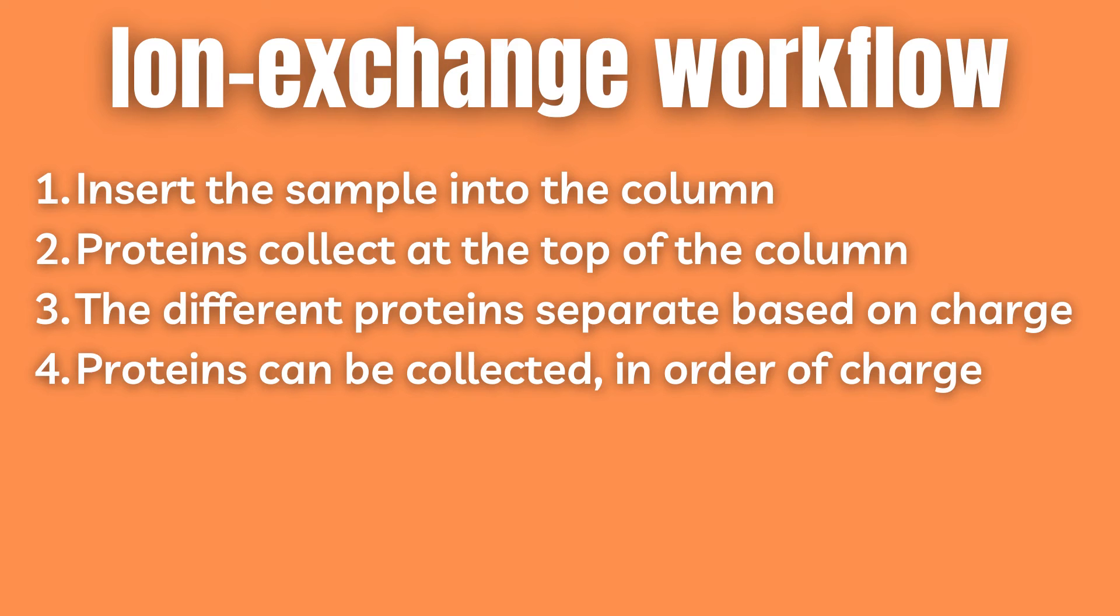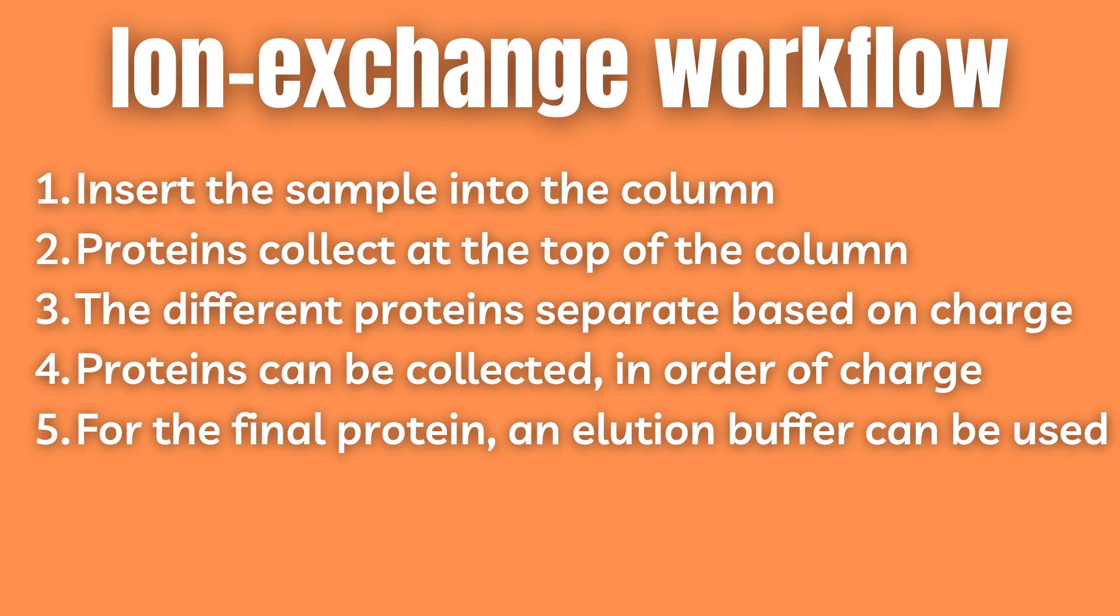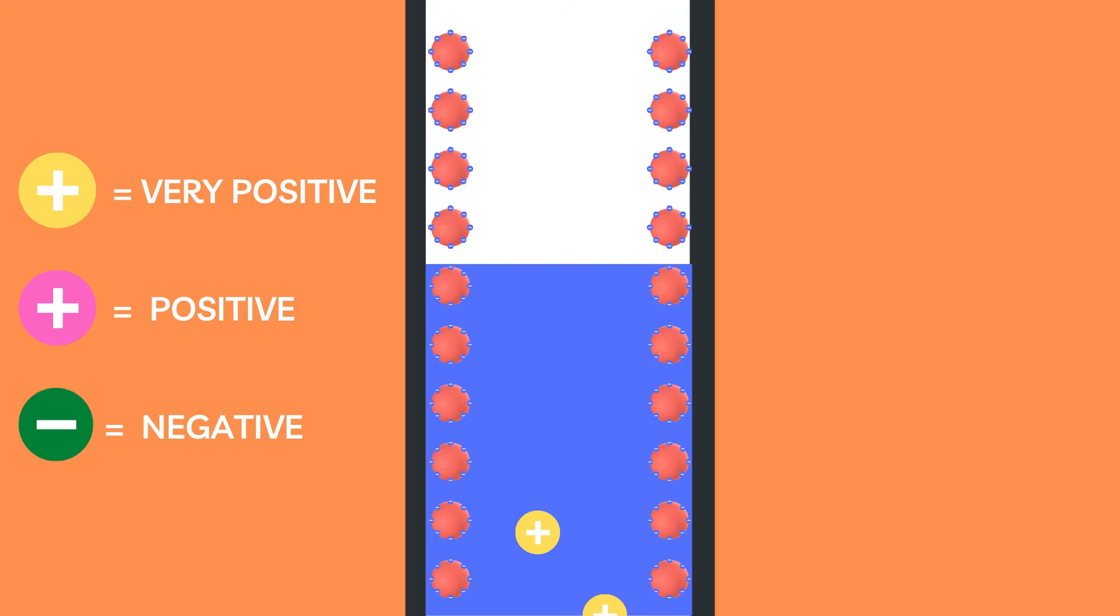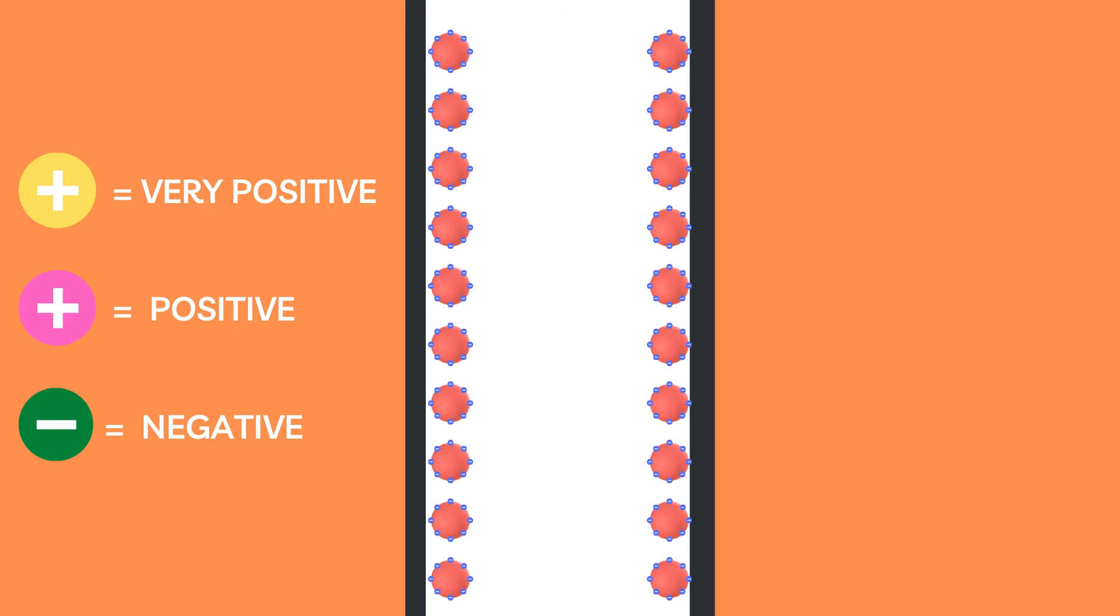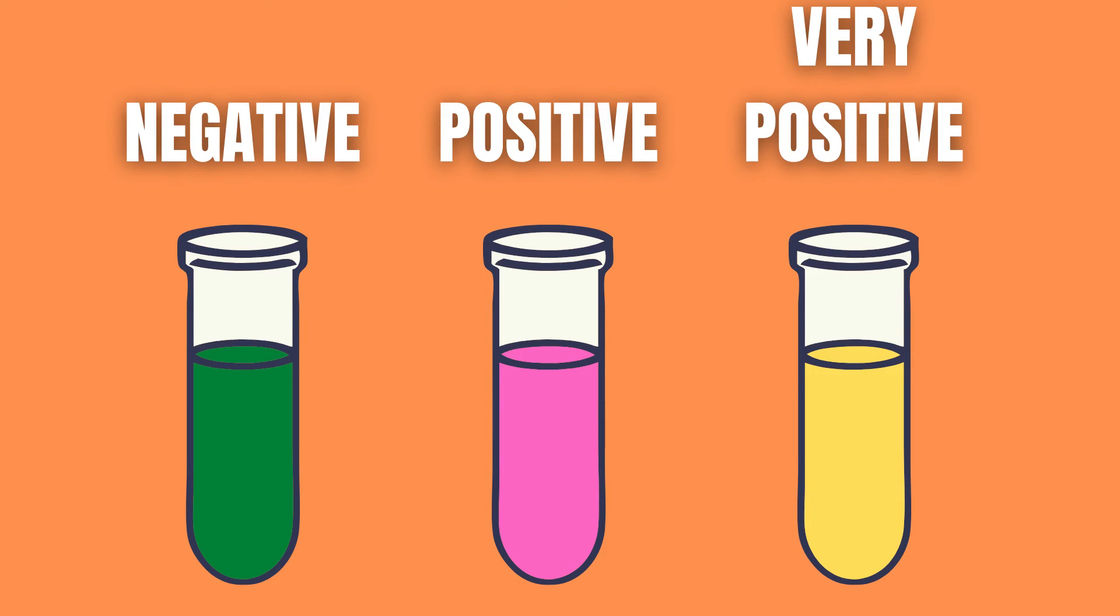Fourth proteins can be collected in order of charge from the most negative to the most positive. Fifth we can also use an elution buffer in order to speed up the collection of the final protein which is the one that is the most attracted to the negatively charged beads and will therefore barely move at all. This can be a salt solution that disrupts the attraction between our protein and the negatively charged beads effectively displacing the protein so that it can continue moving through the column.